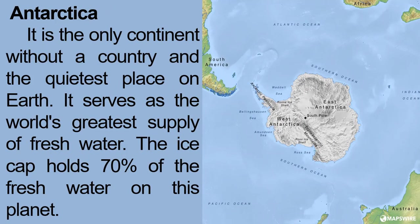Antarctica is the only continent without a country and the coldest place on earth. Its surface serves as the world's greatest supply of fresh water. The ice caps hold 70% of the fresh water on the planet. It surrounds the South Pole and is called the Antarctic continent.